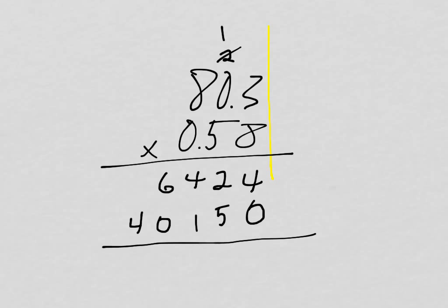Then I take my two partial products and I add them together. Four plus zero is four, two plus five is seven, four plus one is five, six plus zero is six, and four plus nothing is four. If there had been any carrying in there, I would follow all the same rules as for any addition problem. It's just ordinary addition, taking the two partial products.